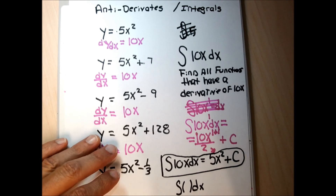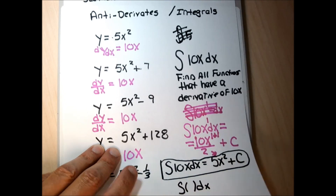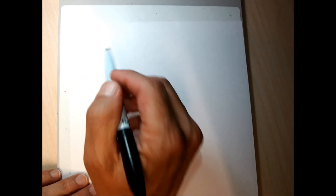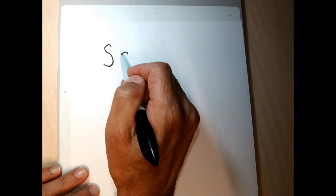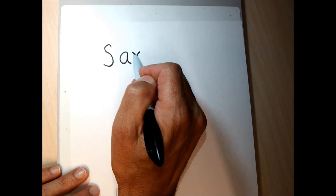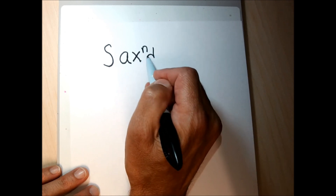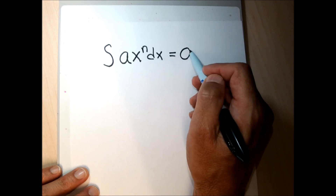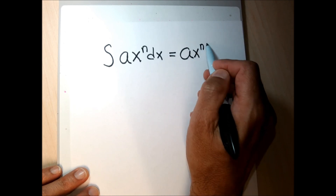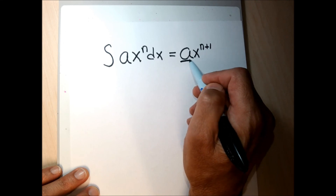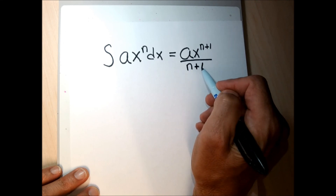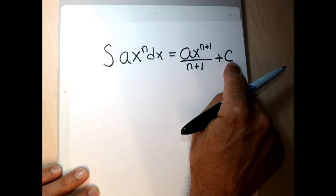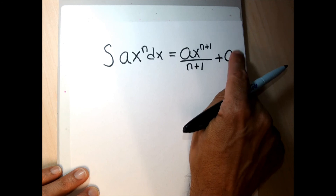We have our first rule for finding the integral or antiderivative of a function. The rule says: the integral of a times x to the n power dx equals a times x to the n+1, divided by n+1, plus C. We add one to the exponent and divide by the new exponent, then add plus C, because any constant term has a derivative of zero.